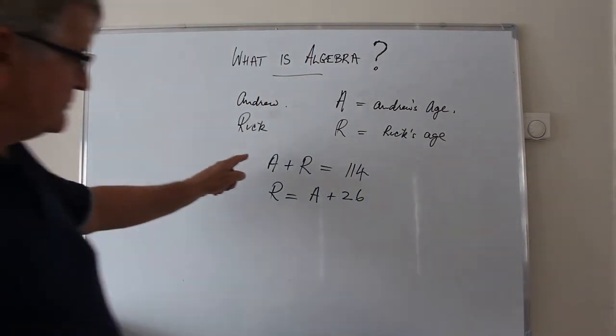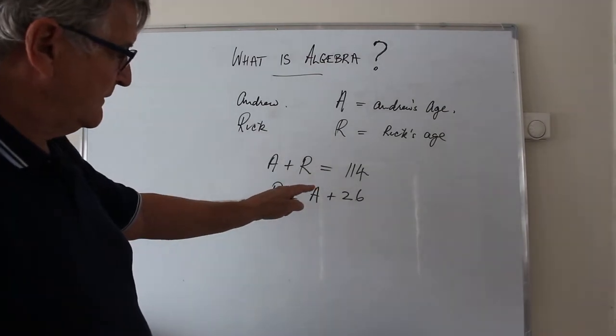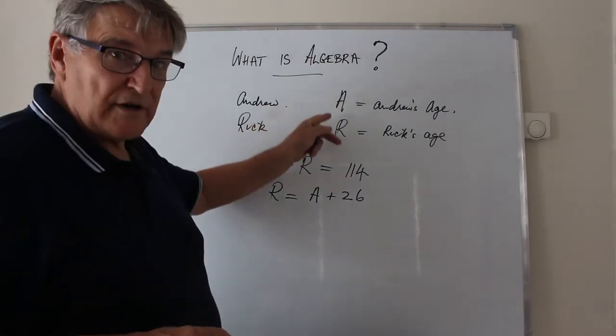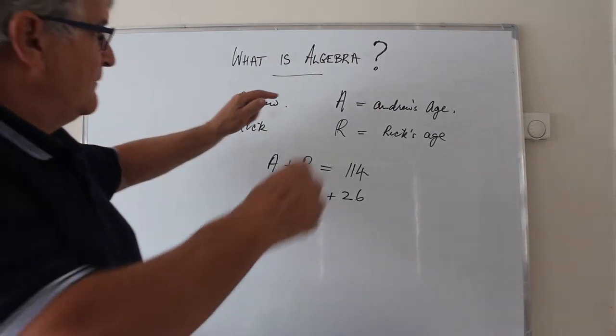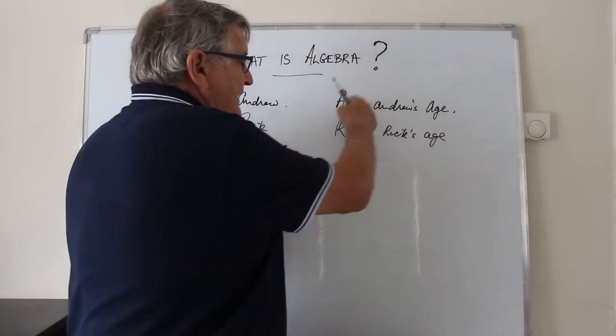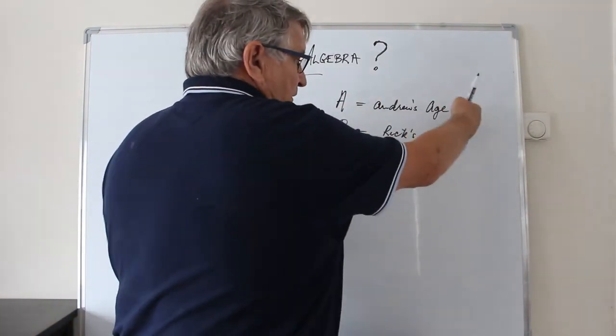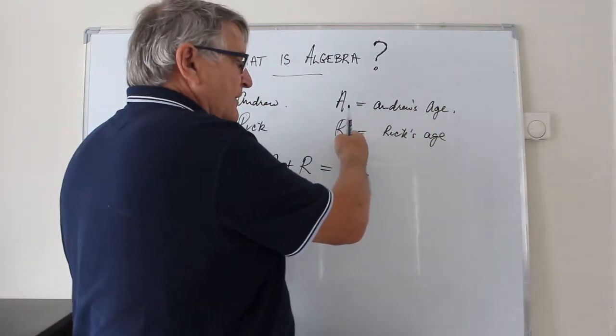Now we can use this information to find either Andrew's age or my age. What we've done is we've let a equal to a particular quantity and we've let r equal to a particular quantity.